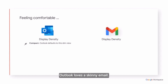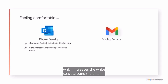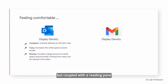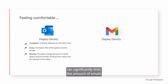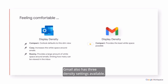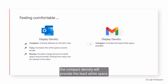Outlook loves a skinny email, defaulting to a compact display density. Outlook also offers a cozy density which increases the white space around the email. Or you could select Roomie which gives lots of white space, but coupled with a Reading pane can significantly limit the amount of emails you can view in the inbox. Gmail also has three density settings available. If you'd like to mimic Outlook, the compact density will provide the least white space.